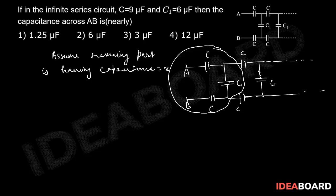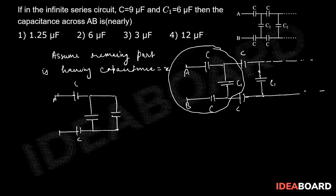Now if I draw the diagram, we have C1 and C from points A to B, and the remaining part has capacitance X. This is the standard method to solve such infinite series problems — for resistance as well as capacitance. We are given C equal to 9 microfarad and C1 equal to 6 microfarad. X and C1 (6 microfarad) are in parallel.